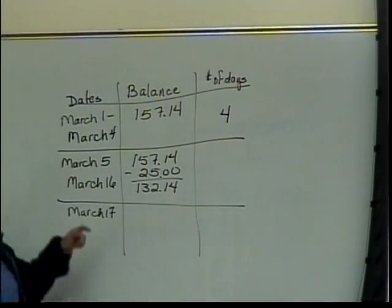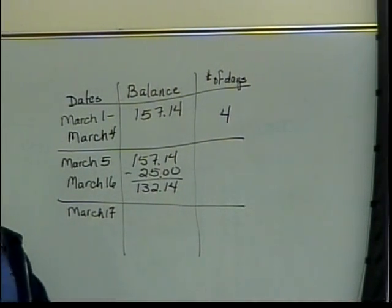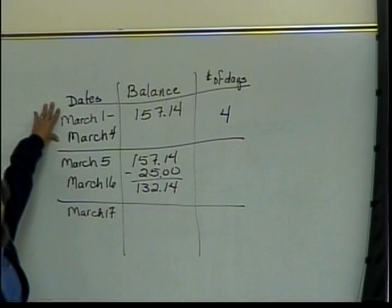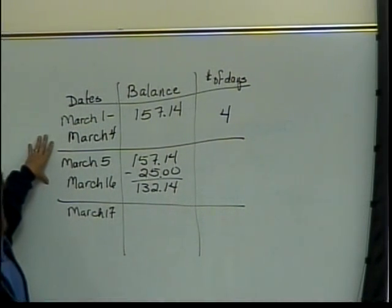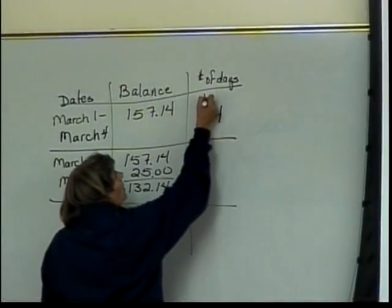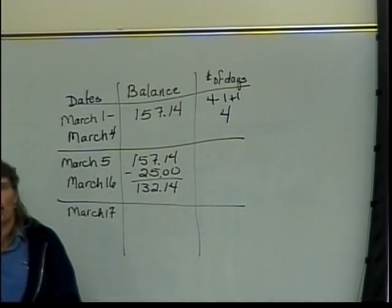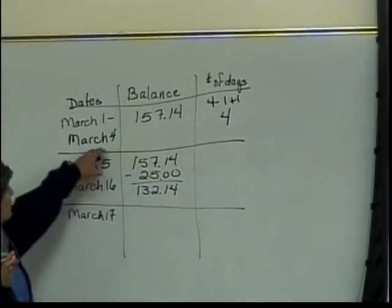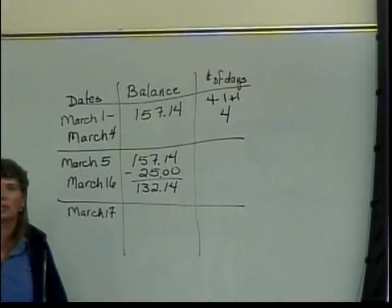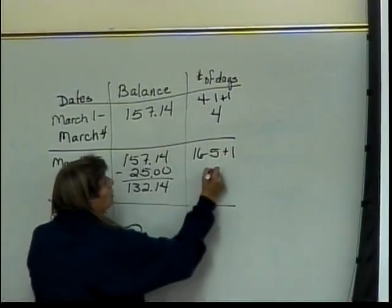How many days is it from March 5th to March 16th? It's tempting to say 11. But think about when you calculated March 1 through 4 — there were four days. If you did 4 minus 1, you wouldn't have gotten that. It should always be plus 1 after you do the subtraction, because by going from 16 minus 5, you drop off the 5th. So I can calculate this by doing 16 minus 5 plus 1, which gives me 12 days.